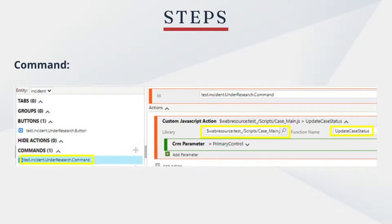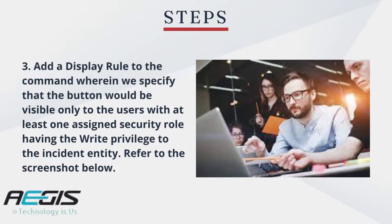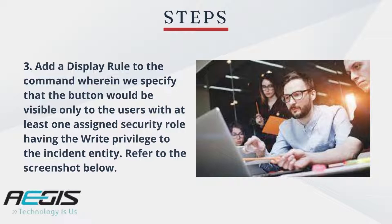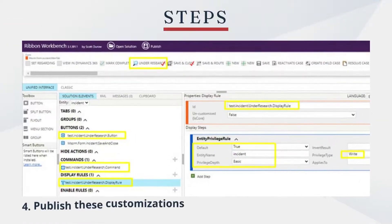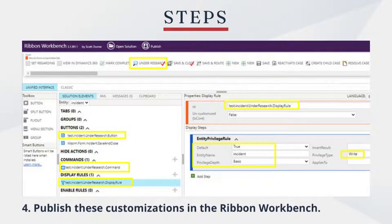Add the created JS web resource as the command to this button. After giving a command, you can see the result as shown in the image. Third step is to add a display rule to the command, wherein we specify that the button would be visible only to the users with at least one assigned security role having the right privilege to the incident entity. Refer to the image as mentioned here.